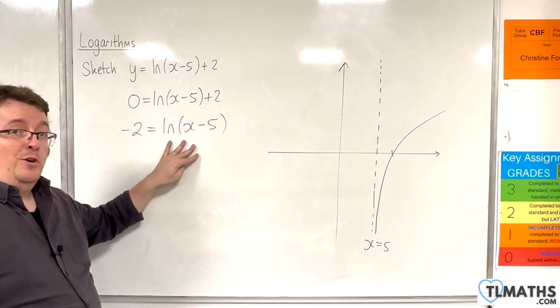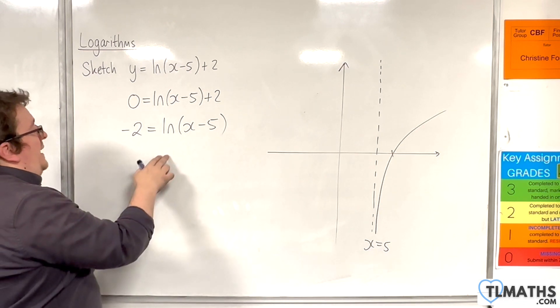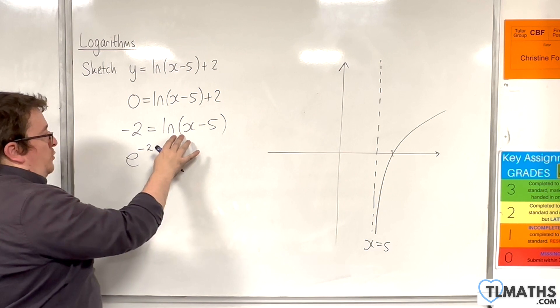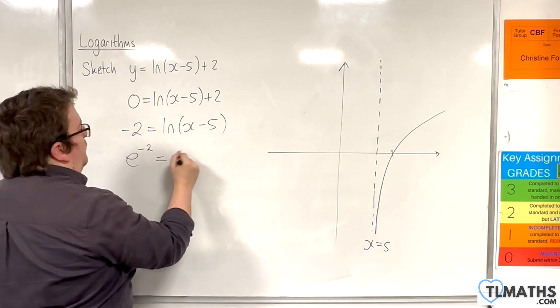Now remember, this is log base e, so we'll have e to the power of minus 2. Going from logarithmic to exponential form, e to the power of minus 2 is the x take away 5.